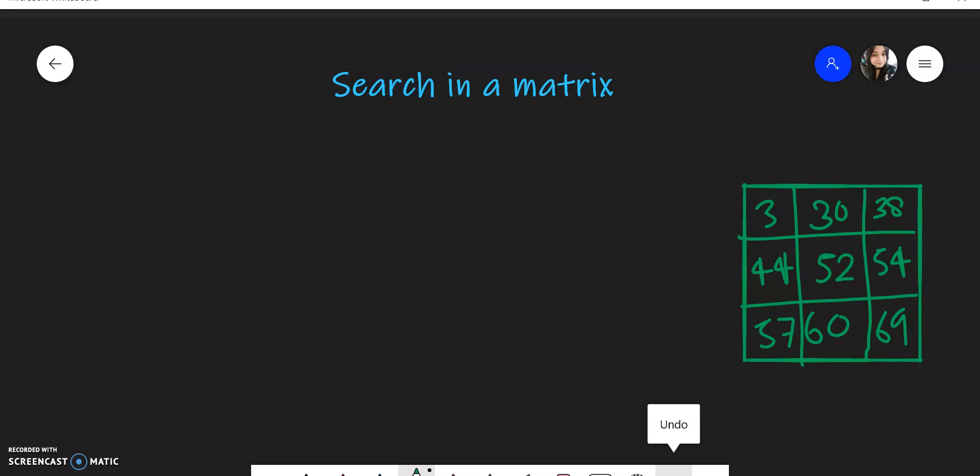Now let's see how we can do that. So our algorithm is pretty simple. We will start from here, the bottom left corner, and let's try to see the pattern. Suppose I need to find a number 54. So to find that number, we have started from this corner.